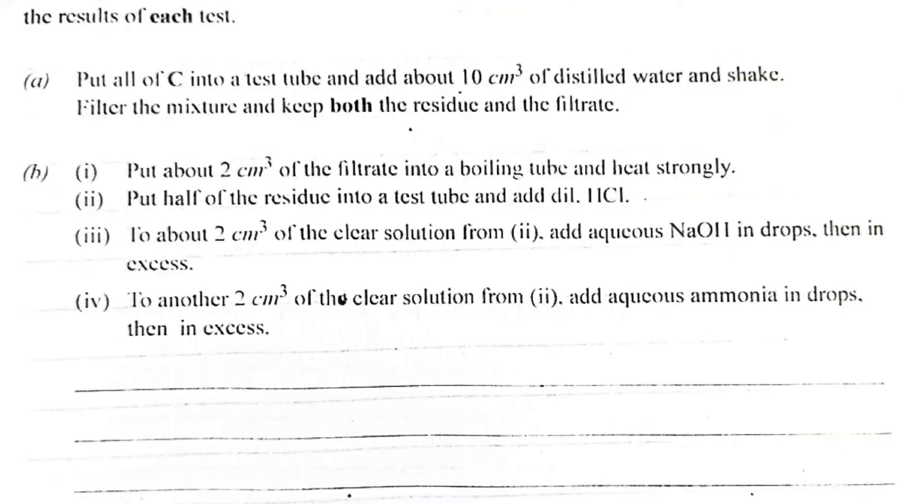There are some questions. If you observe properly. There are some questions that no marks was allocated to. Look at question number 3. Well, we are to add about 2 cm³ of clear solution from 2 above. Add aqueous NaOH in drops. Then in excess. There was no mark for that. To another Roman figure. To another 2 cm³ of clear solution from Roman figure 2. Add aqueous ammonia in drops. Then in excess. There were no marks for that also. So which means that it is not every question being asked that marks were allocated to. But our own as a student is just to do the proper thing. And expect if it is WAEC or NECO or your university laboratory, or anybody marking, to mark appropriately. But at least once you have done the correct thing, you will have your mark totally.